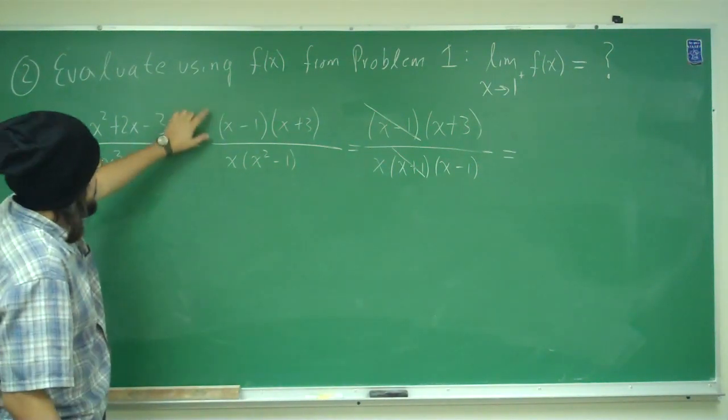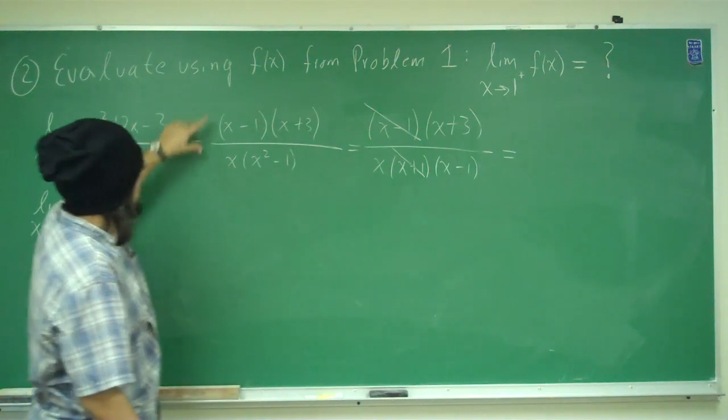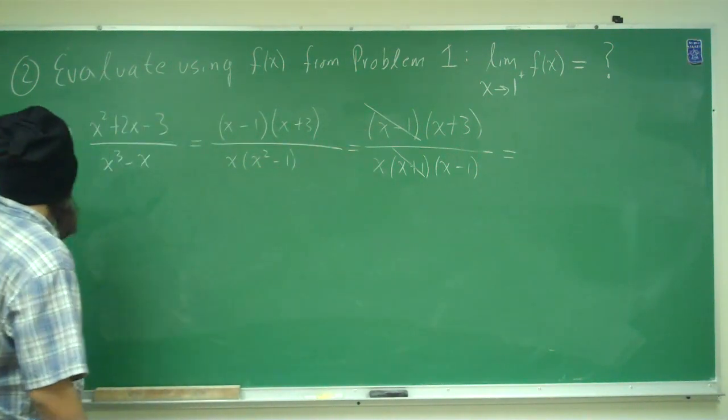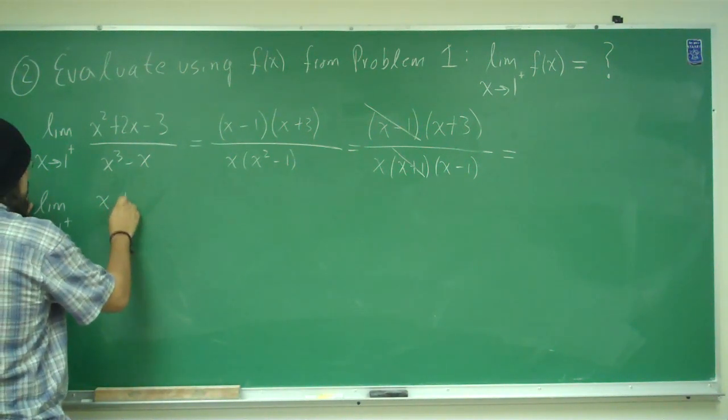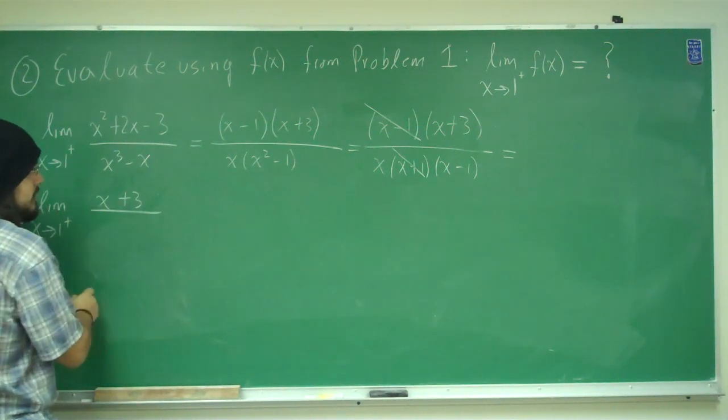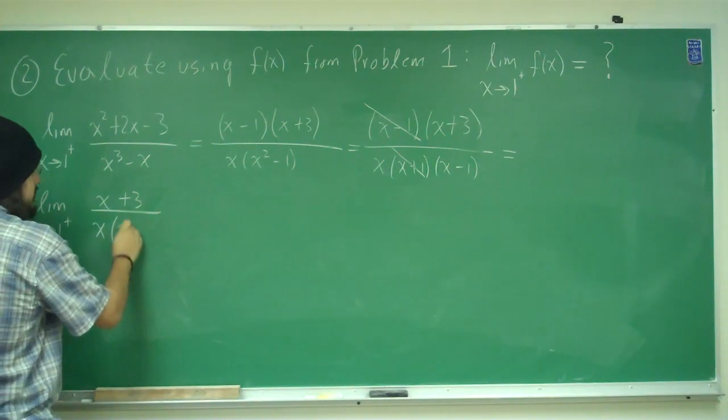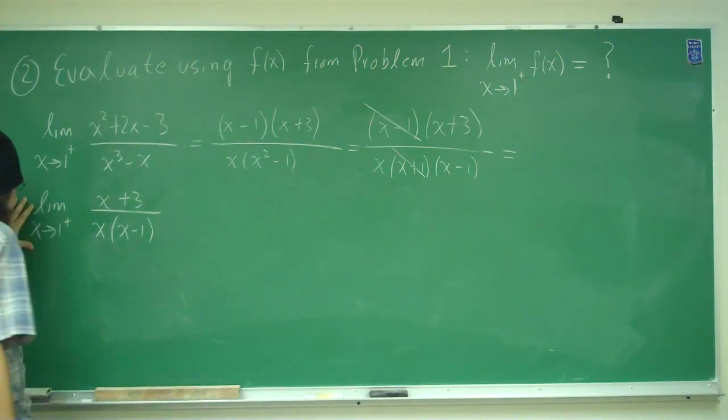By the way, I didn't put limit here, didn't put limit here, but usually you want to put limits in front, so right here I'm going to put it, so we have limit x plus 3 divided by x, x minus 1.